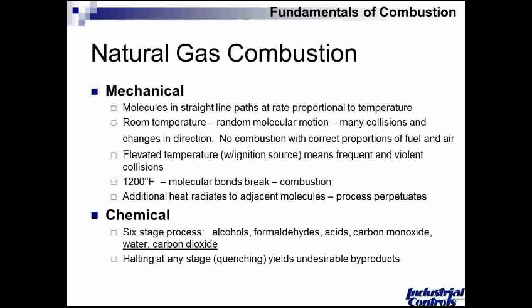If we introduce an ignition source — a hot ember, a spark, a hot surface igniter — something that can warm the fuel or mixture past that 1,200 or so degree mark (for natural gas), we'll start to affect a reaction. The bonds will break, and the beginning of combustion will occur. Even in the absence of that initial spark, the combustion reaction will perpetuate: the ignited fuel and air envelope liberates heat to the incoming fuel and air mixture, thus perpetuating the process. So while some burners must maintain a source of ignition, under most conditions that continuous ignition source is not always necessary.